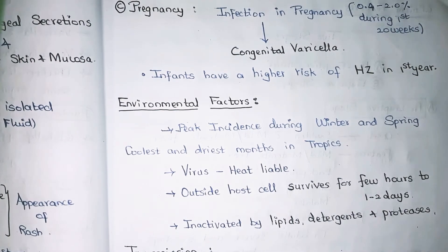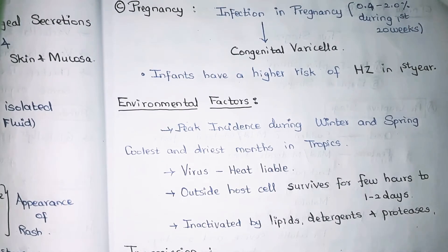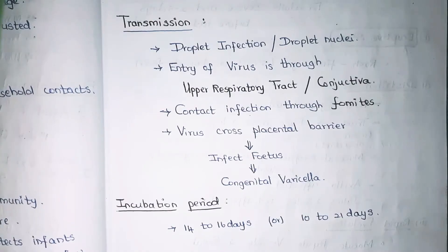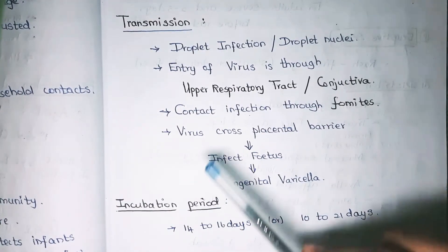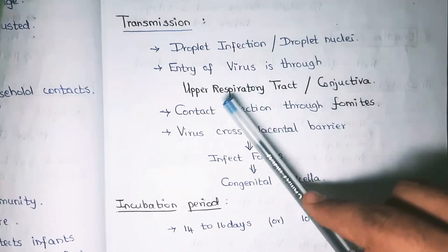Cleaning surfaces using lipids, detergents, and proteases decreases the spread of infection. During a chickenpox infection, cleaning houses and products used by the infected person prevents the spread of infection to household members.